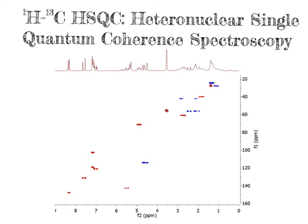Here we are going to start looking at heteronuclear correlations, specifically focusing on heteronuclear single quantum coherence spectroscopy, or HSQC for short. We will focus this video primarily on the HSQC correlations between protons and carbon-13. The HSQC experiment can also be done for other types of heteronuclear coupling, for example coupling of nitrogen-15 with carbon-13, which can be very useful in protein biochemistry for determining protein structures, since the backbone of a protein contains nitrogen-carbon bonds throughout.